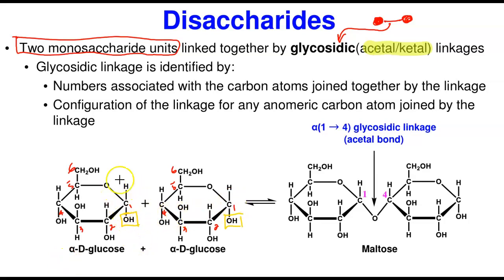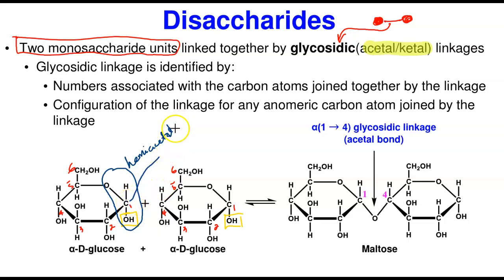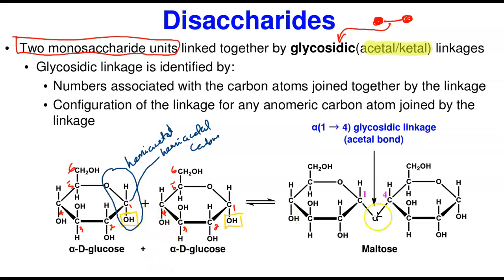Carbon number one here forms the hemiacetal carbon. So carbon number one and carbon number four join together — carbon four is not a hemiacetal carbon. When two alpha-D-glucose units join together they form maltose. Every other structure remains the same but you remove one hydrogen and one whole OH group, joining them to form the bond. You lose one molecule of water in this formation.